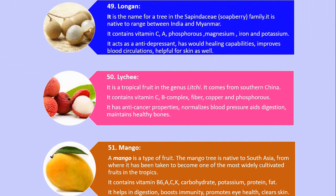Number 49. Longan. It is a name for a tree in the Sapindaceae (Soapberry) family. It is native to the range between India and Myanmar. It contains vitamin C, A, phosphorus, magnesium, iron and potassium. It acts as an anti-depressant, has wound healing capabilities, improves blood circulation, and is helpful for skin.